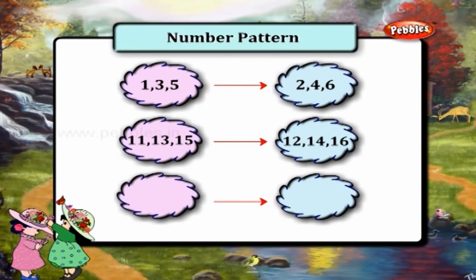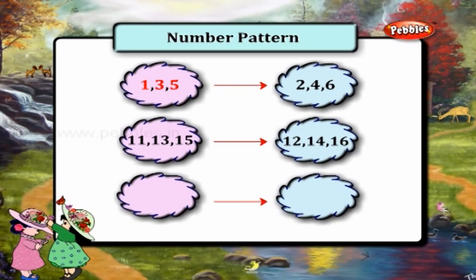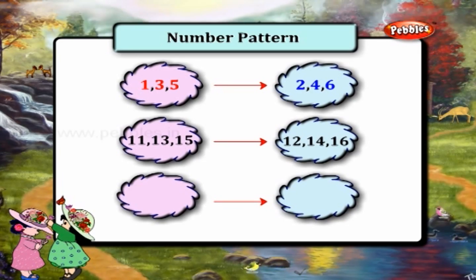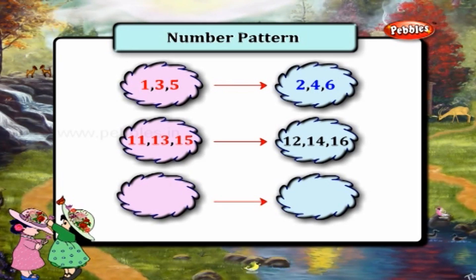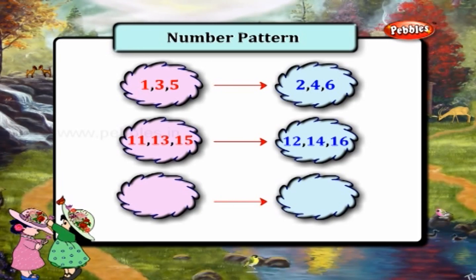Now let's look at another example. 1, 3, 5 becomes 2, 4, 6. 11, 13, and 15 becomes 12, 14, and 16. Now what is the pattern followed here?